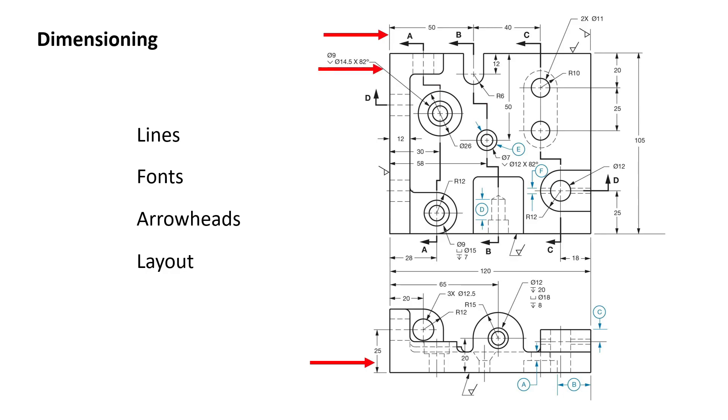In addition to proper line usage, there are some basic rules of dimensioning that we have to become familiar with so that dimensions are easy to find and easy to read. For instance, the font must be a specific style and size, and arrowheads must be sized relative to the font.